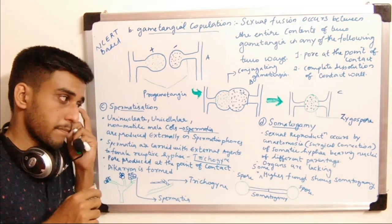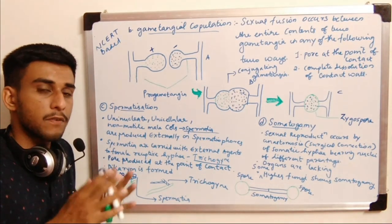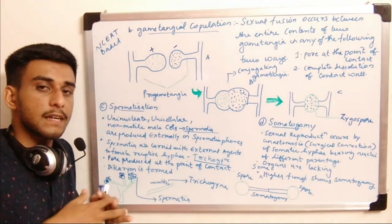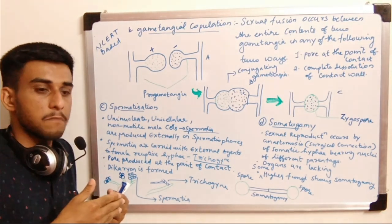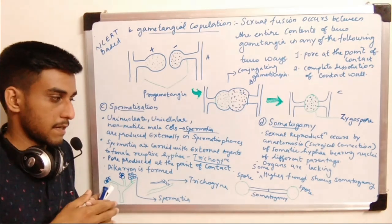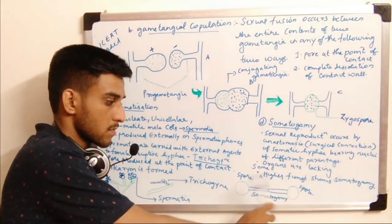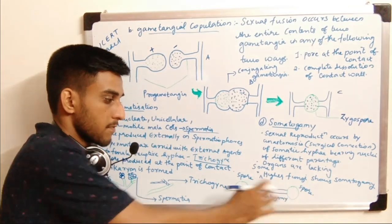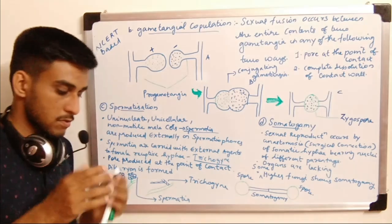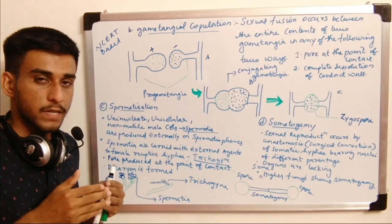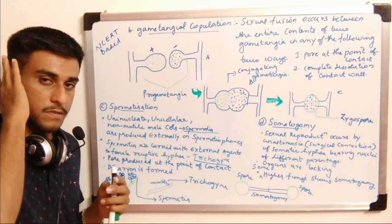Sexual reproduction occurs by anastomosis of somatic hyphae bearing nuclei of different parentage. Anastomosis is a biological term involving the connection between two hyphae, helping in fusion between two nuclei. Two different parent hyphae come together and fuse to form sexual reproduction.